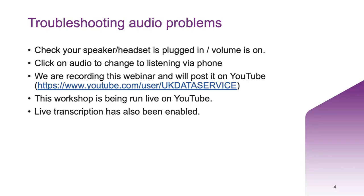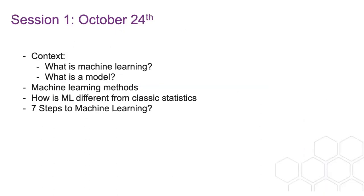Here's a little rundown of what to expect in this three-part workshop series. This session we're going to be looking at an overview of machine learning — some definitions of what exactly machine learning is, what a model is and the difference between an algorithm. We'll then look at different machine learning methods, discuss how machine learning differs from classical statistics, and introduce a case study where we work through the seven steps to machine learning.